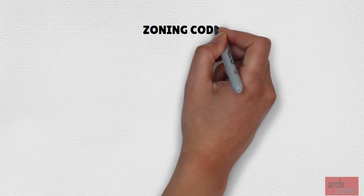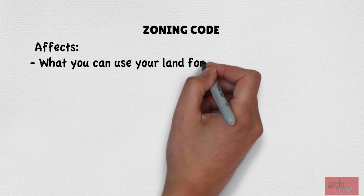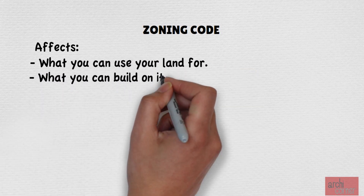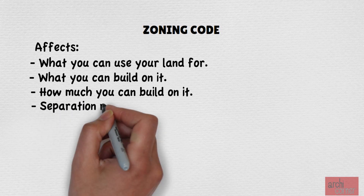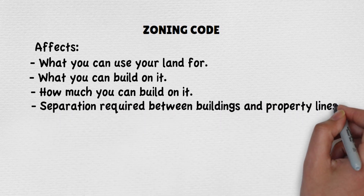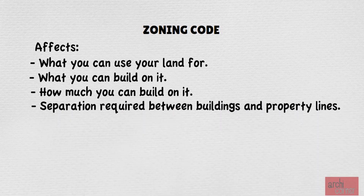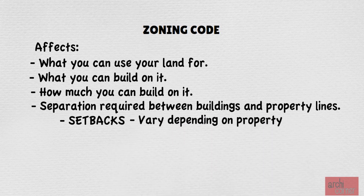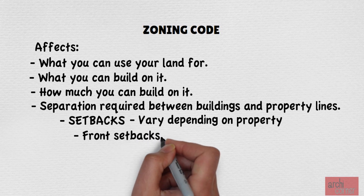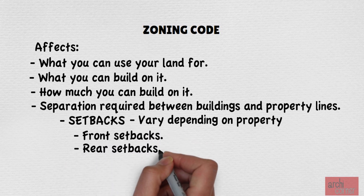Starting with the zoning code: the zoning code has different uses for each parcel of land. Zoning can affect what you use your land for, what you can build on it, how much you can build on it, and yes, they can also affect the separation required between buildings and property lines. We are talking about property line setbacks. The zoning code may have setbacks that require buildings be a certain distance away from the property line. The exact distance will vary from lot to lot, and it will also vary depending on the side of the lot — it is very common that the setback will be different for the front, rear, and side of the property.